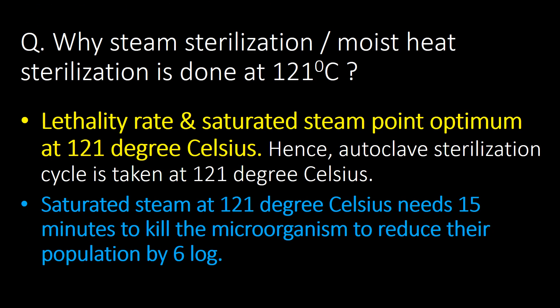While steam sterilization or moist heat sterilization is done at 121 degrees Celsius, the lethality rate and saturated steam point are optimum at 121 degrees Celsius, hence the autoclave sterilization cycle is taken at 121 degrees Celsius. Saturated steam at 121 degrees Celsius needs 15 minutes to kill microorganisms and reduce their population by 6 log.